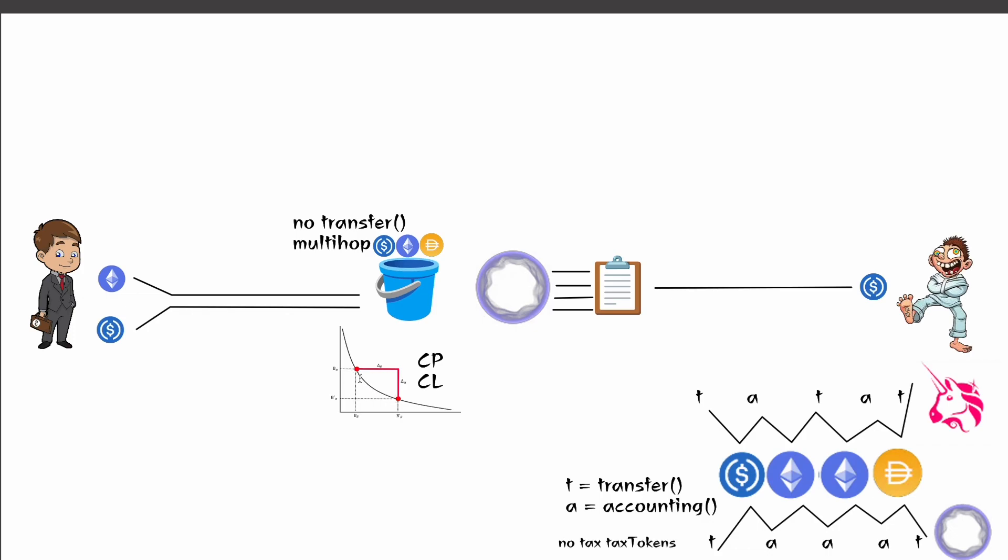And that's basically where you provide liquidity in both tokens to a designated range. Now, the danger of this is if the token price leaves that range, then you become all holding one token and you stop gaining trading fees because your liquidity is not in the price range that is currently being active.